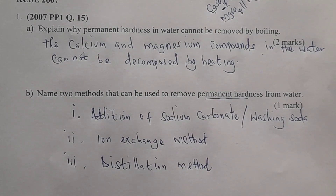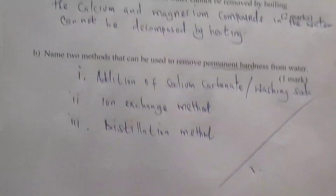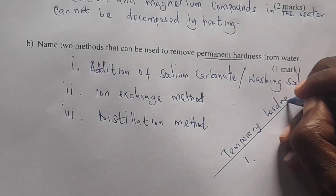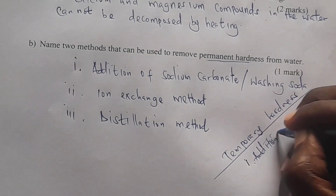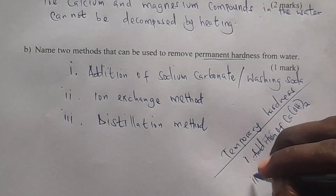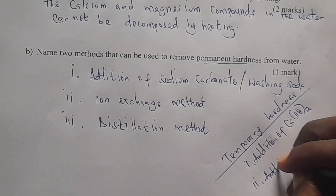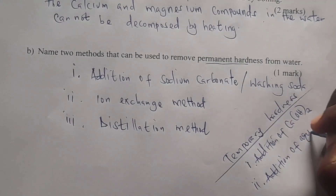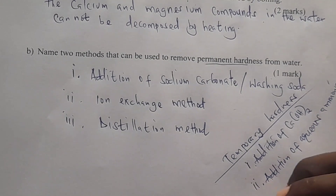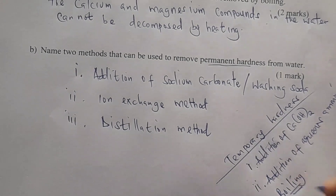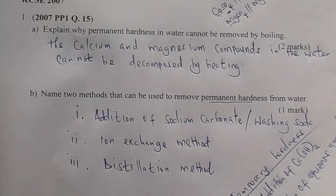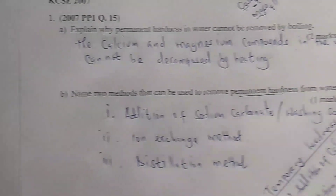But in case you are asked the methods used to remove temporary hardness, there were also three. One was addition of calcium hydroxide solution to the hard water. Number two, we are having addition of aqueous ammonia. And the last one was the method called boiling. Those are the three methods you can use to remove temporary hardness. But here, you are asked the ones used to remove permanent hardness.